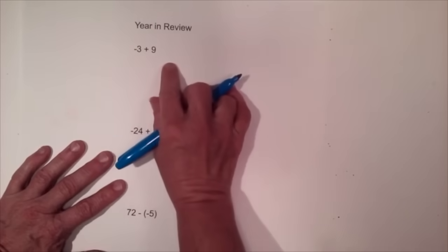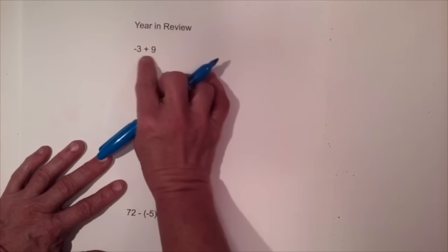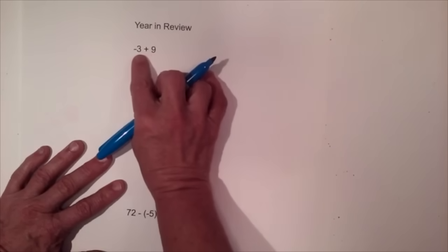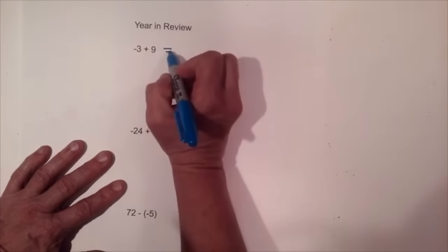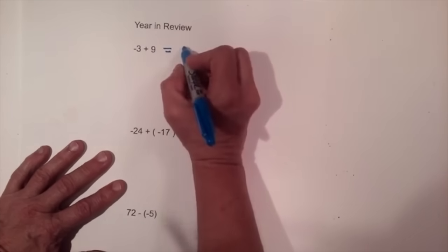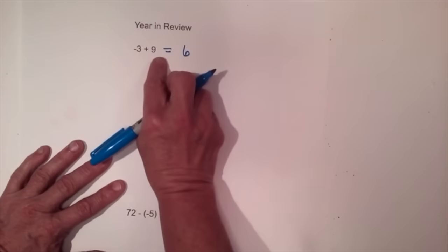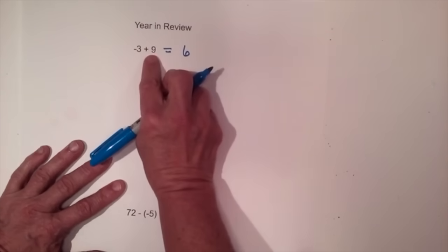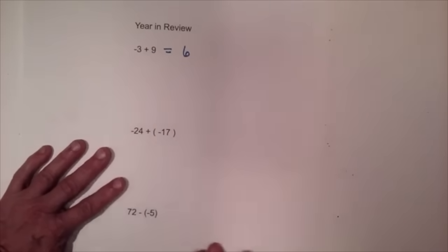We're going to start with signed numbers. When you add a negative and a positive, you take the difference between those two — in this case three and nine — the difference is six. Then you take the sign of the larger value. Nine is positive and greater than three, so that's going to be positive six.